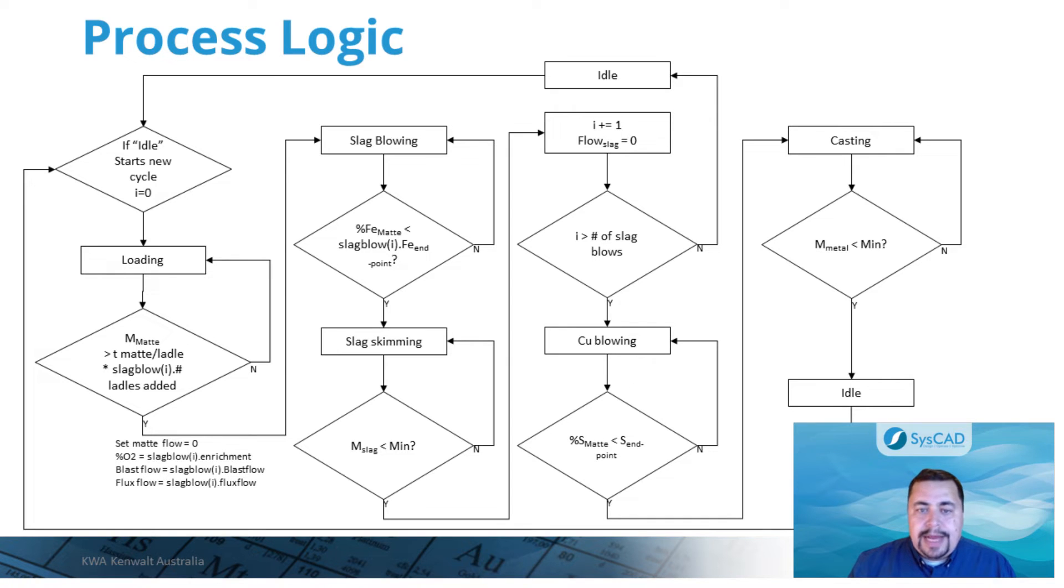This figure summarizes, at a high level, the overall logic of the model. Once an instance of the converter class is defined and the dynamic model starts, the converter follows some initialization routines and sets its state to idle. At this point, it's waiting for fresh matte addition, and depending on which slag blow it is, it loads the matte until the prescribed number of ladles is met. The initial matte composition used in this example is such that both slag and copper blows are required, in this case containing approximately 12.3% iron and 65.1% copper by mass. For example, the first slag blow was set to receive three matte ladles, followed by two and one ladles for the second and third slag blows respectively.